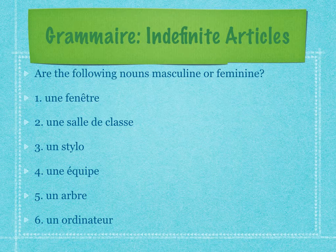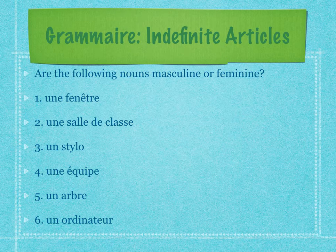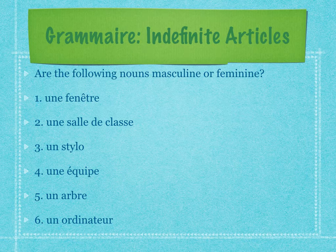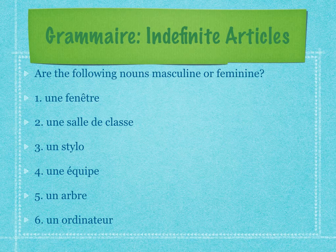For example, une fenêtre — a window. We know that's a feminine noun because we use une with it. Is there anything about a window that makes it a girl? No — the French just use une with it. Same thing with une salle de classe. Or un stylo — a pen — which has to be masculine because we use un. You can do this with any noun, even words you don't know yet. Une équipe — you may not know what it means, but you know it's feminine because it has une in front. Un arbre is masculine because it has un in front. Same with un ordinateur. The only way to tell is by looking at that article.